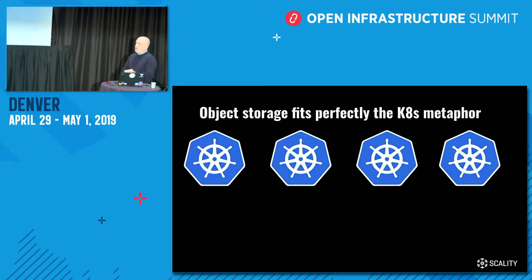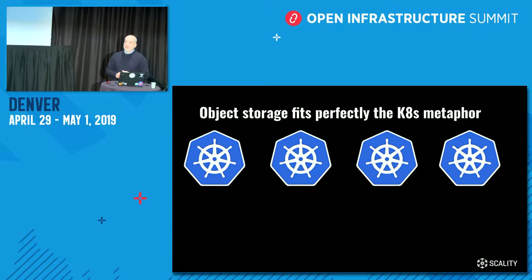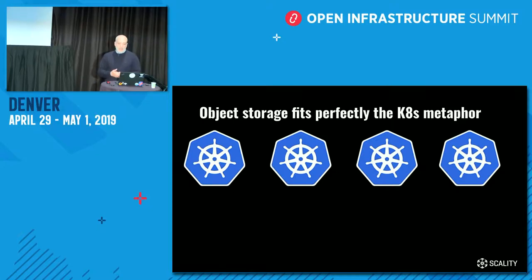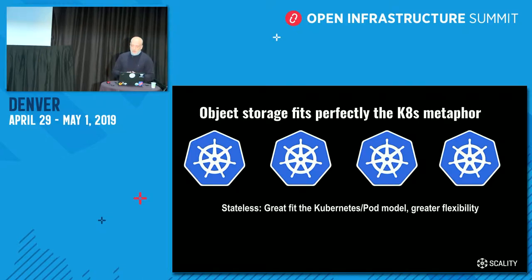But we think the object storage story is one we don't talk about enough in the cloud-native world. A lot of conversations around CSI — the cloud storage interface inside Kubernetes — revolve around block and file. We believe the object storage model is a lot simpler and fits perfectly with the Kubernetes metaphor. Because, if you think about it, it's stateless, just like the Kubernetes pod model is supposed to be.